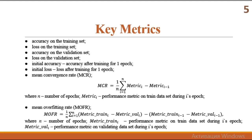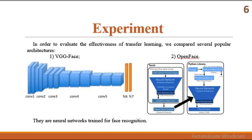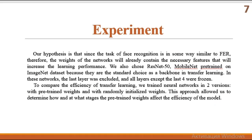The formulas for metrics are presented on the slide. In order to evaluate the effectiveness of transfer learning, we compared several popular architectures, such as VGGFace, OpenFace, ResNet, and MobileNet. You can see architectures of face recognition-based models on the slide. Our hypothesis is that since the task of face recognition is in some way similar to FER, the weights of neural networks will already contain the necessary features that will increase the learning performance. We also chose ResNet-50 and MobileNet pre-trained on the ImageNet dataset, because they are standard choices as a backbone in transfer learning.